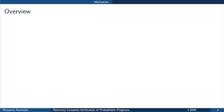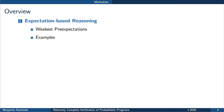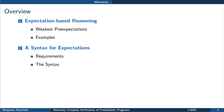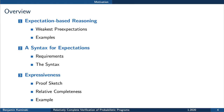I will now give you an overview of the rest of the talk. I will first give an introduction to expectation-based reasoning, in particular weakest pre-expectations and a few examples. I will then present the syntax we have developed, show a few requirements on the syntax, and then present the syntax itself. Then we'll go through the expressiveness proof in outline, and then I'll speak about relative completeness and show a small example.